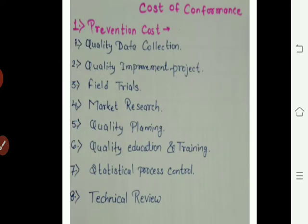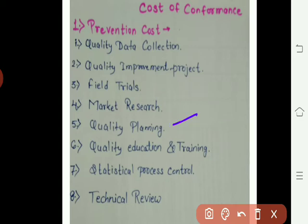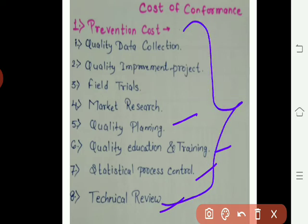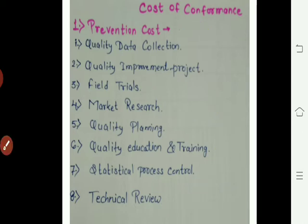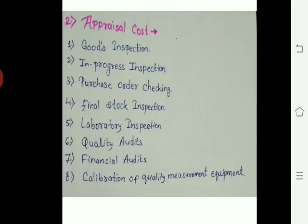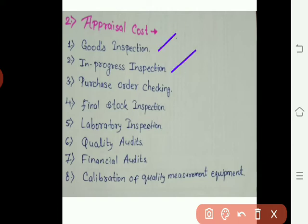Cost of conformance — first is prevention cost. If someone asks which of these is a prevention cost versus an appraisal cost, the prevention cost items include: quality data collection, quality improvement projects, field trials, market research, quality planning, quality education and training, statistical process control, and technical reviews. All these come under prevention.